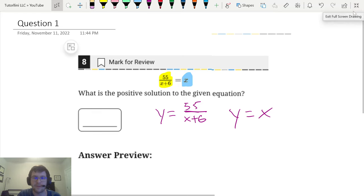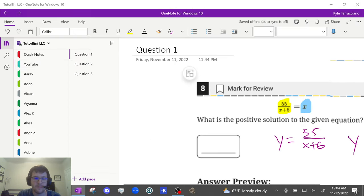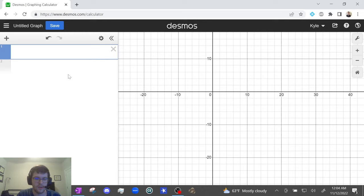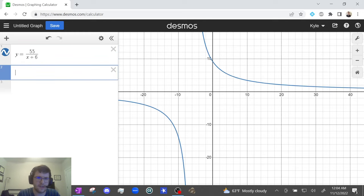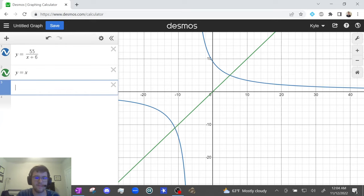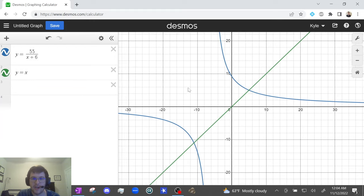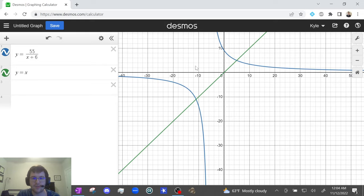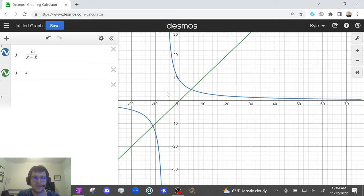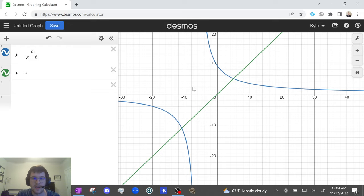So I'll demonstrate for the first question. Y equals 55 over x plus 6, and y equals x. Remember, you should probably bring a mouse with you on test day because it's much easier to click and drag and move around. You can use the scroll wheel to zoom in and zoom out to find the points of intersection. I see that the points of intersection are here and here.